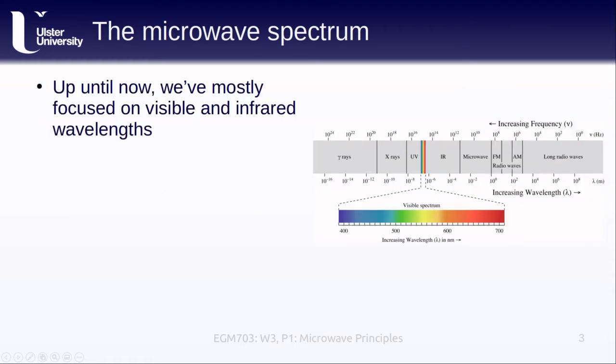Up until now, we've focused our attention on visible and infrared wavelengths between roughly 400 nanometers and about 35,000 nanometers. For microwave remote sensing, we're going to be looking at the portion of the electromagnetic spectrum with wavelengths ranging from about one millimeter to one meter.